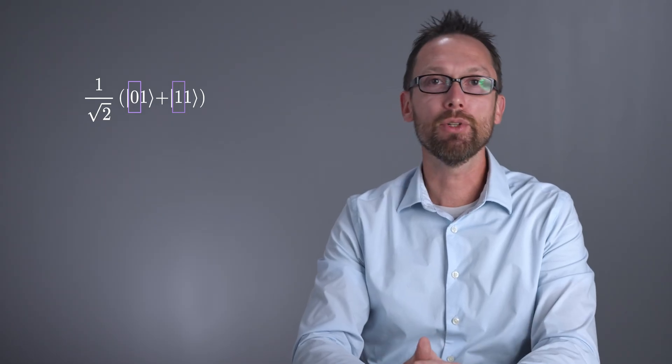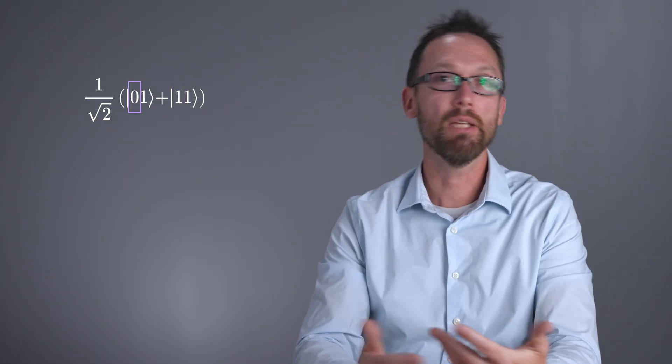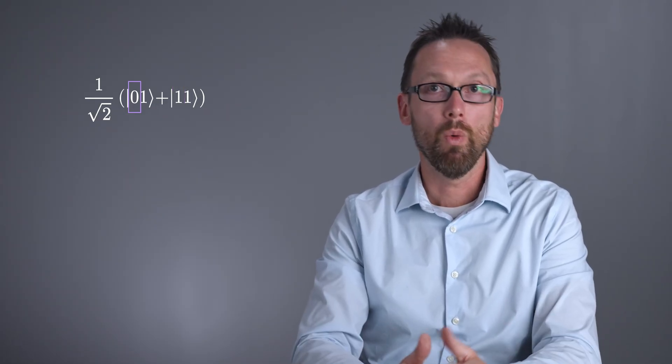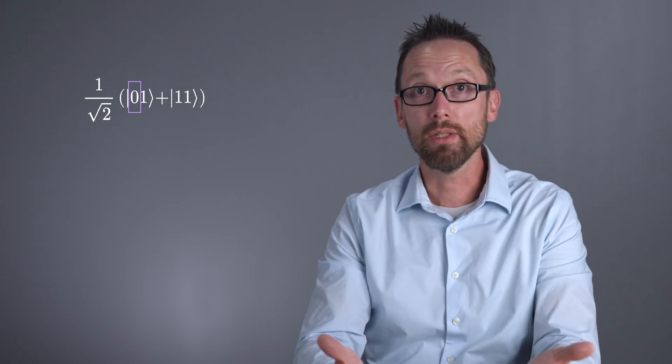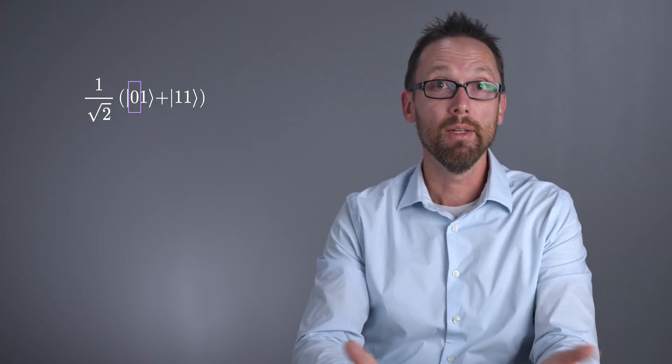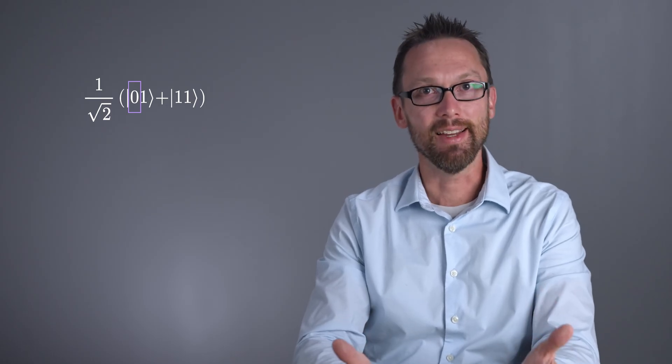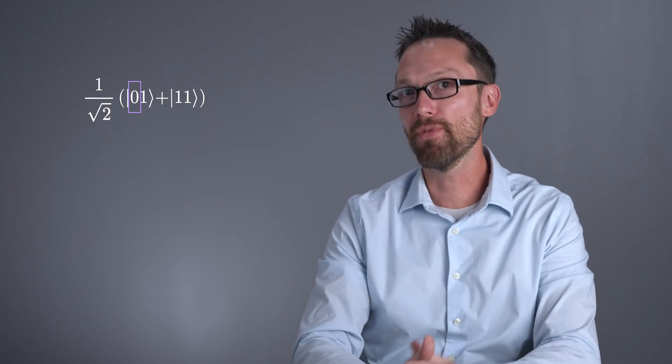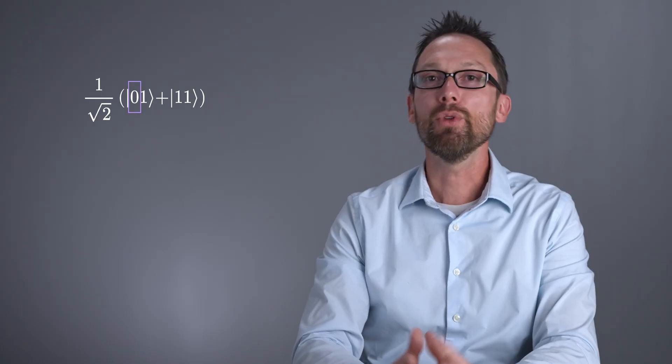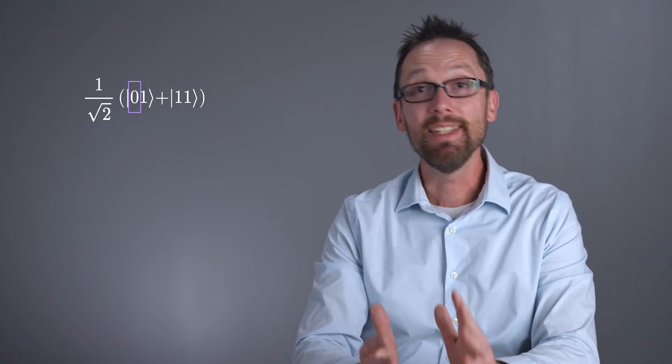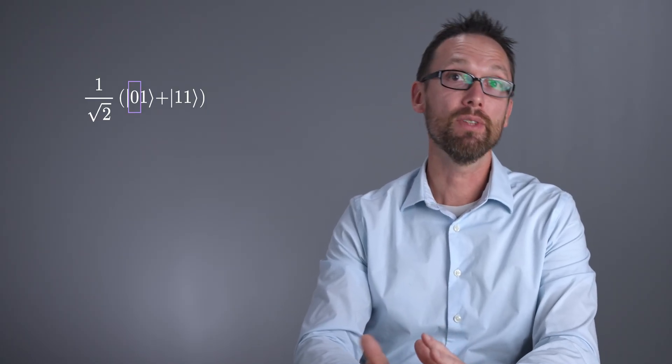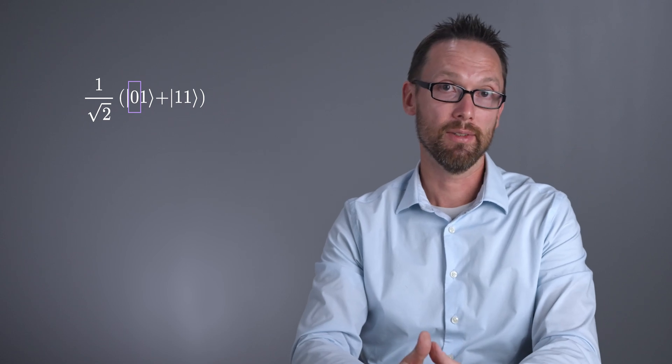What if instead I measured qubit 1 and found it to be in the state, say, 0? Well, then I would know that the whole system is in the state 01. And I would know that qubit 0 was in the state 1. But I already knew that, didn't I? That was the only possibility from the very beginning. So the measurement of one qubit did not affect the possible measurements on the other qubit in this case. The qubits in this state are not entangled.